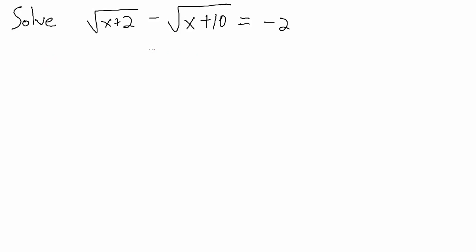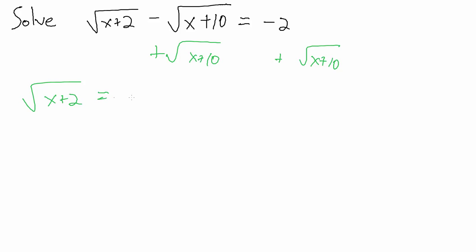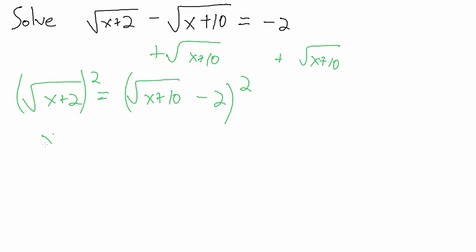Let's add the square root of x plus 10 to both sides. That gives us the square root of x plus 2 equals the square root of x plus 10 minus 2. Now we want to square both sides. On the left-hand side, the square root of x plus 2, that quantity squared, is simply x plus 2.